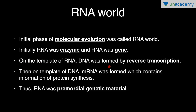On the template of RNA, DNA was formed by reverse transcription. Then on the template of DNA, mRNA was formed which contains the information for protein synthesis. So that is how molecular evolution took place: first it was RNA — the RNA world — then on the template of RNA, DNA evolved; then on DNA, mRNA is formed, and on mRNA, protein is formed.